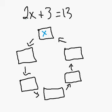Well, the very first thing that happens to x is it's multiplied by 2. So I write down multiply by 2. The very next thing that happens is 3 is added. And when I do all of that, I get 13.